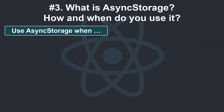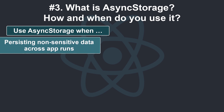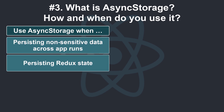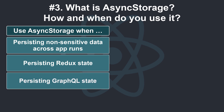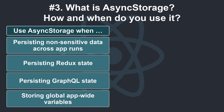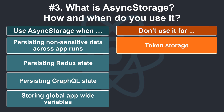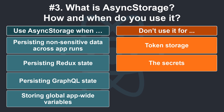We use async storage when: persisting non-sensitive data across app runs, persisting Redux state, persisting GraphQL state, and storing global app-wide variables. We don't use it for token storage and secrets.